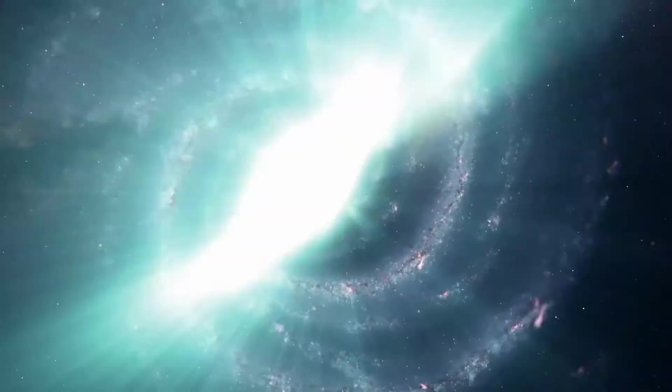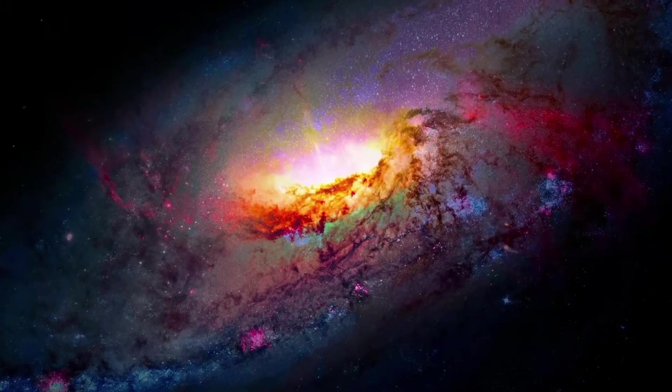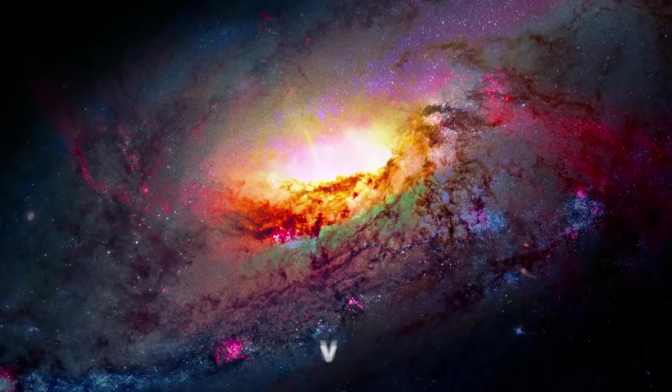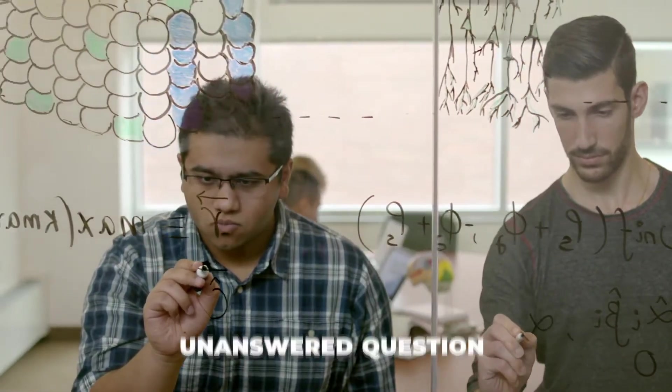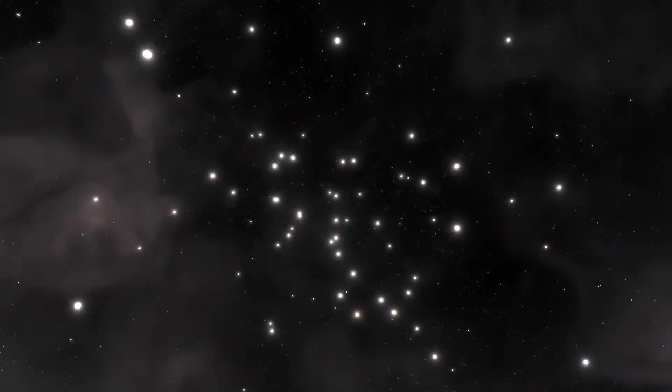When astronomers look out at the hundreds of billions of galaxies in the observable universe, nearly all of them have a supermassive black hole at their centers. Where these black holes come from, and even how supermassive black holes are formed, remains an unanswered question. Could these first stars and the black holes they likely created help answer these questions?